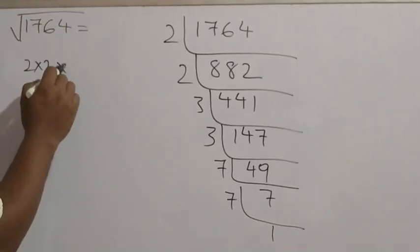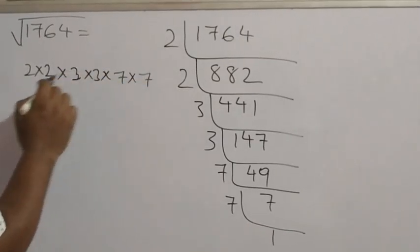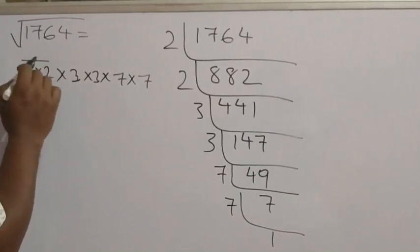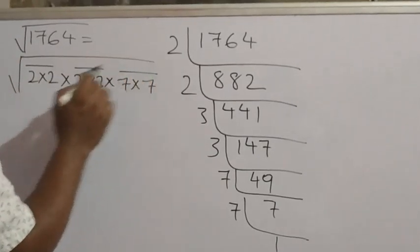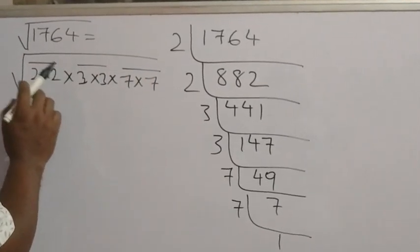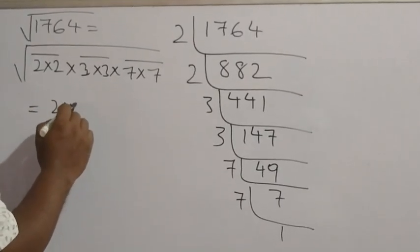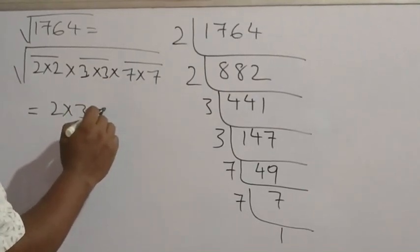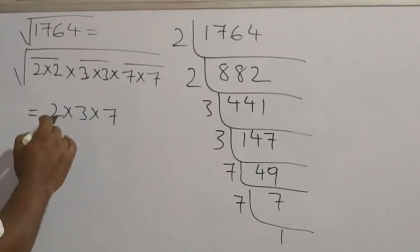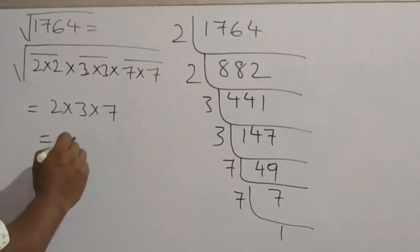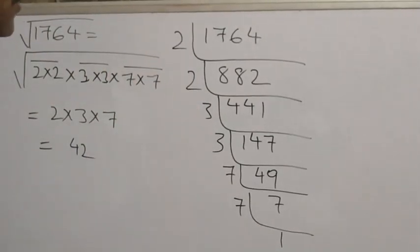So 1764 = 2 × 2 × 3 × 3 × 7 × 7. Now make pairs: (2 × 2) is one pair, (3 × 3) is one pair, (7 × 7) is one pair. From each pair take one number: take 2, take 3, take 7. So the square root of 1764 = 2 × 3 × 7 = 6 × 7 = 42. You got the square root by the prime factorization method — a very easy one.